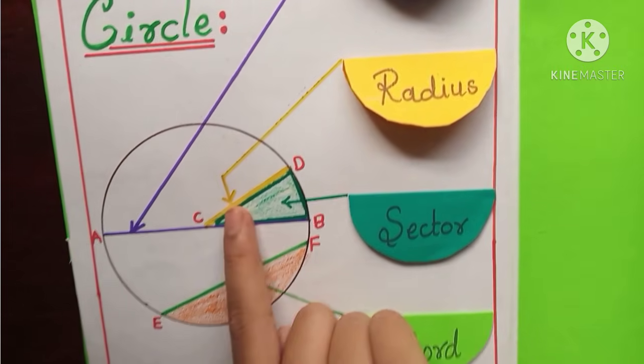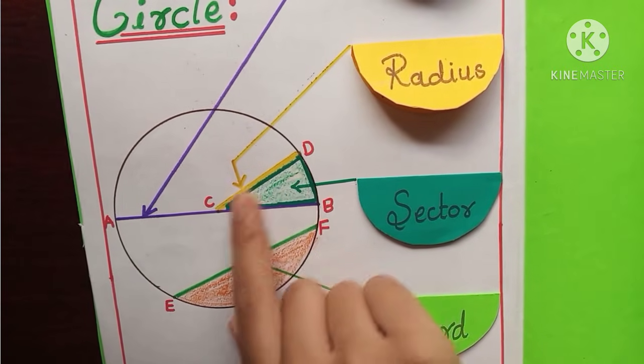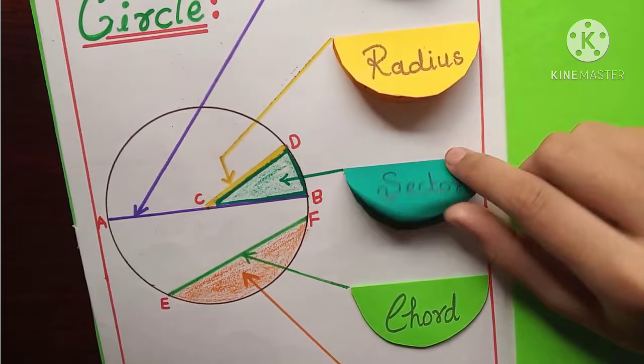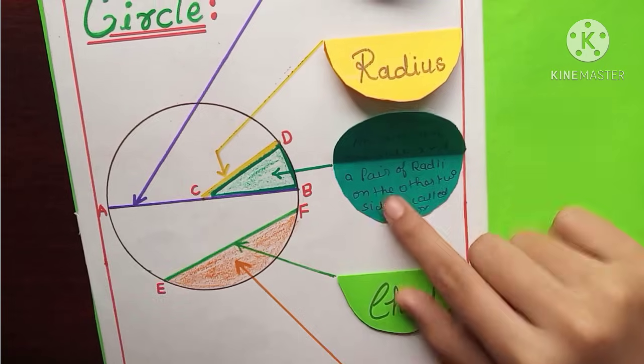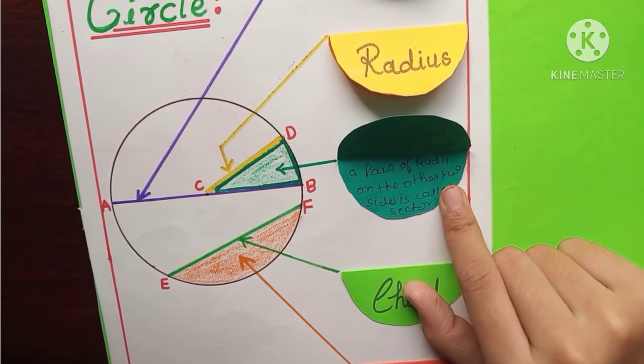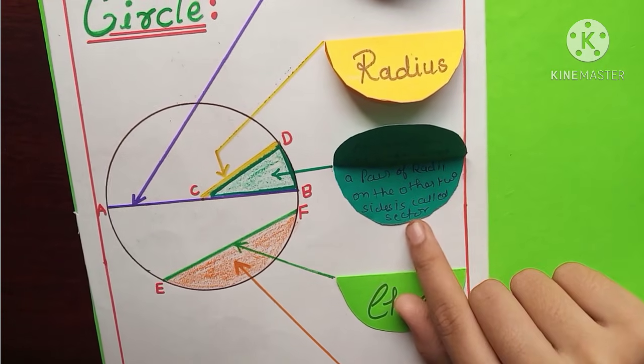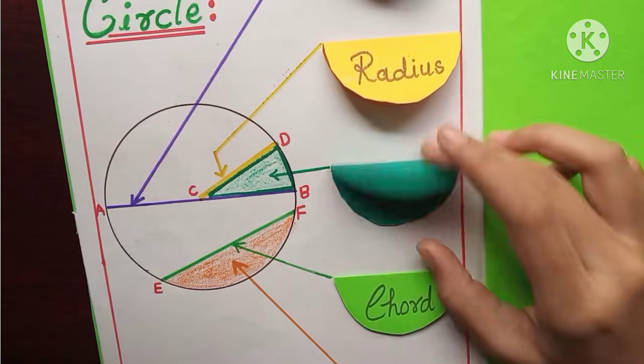And here is the sector. You can see this green, green color. This is sector. Here's the definition. An arc on one side and a pair of radii on the other two sides is called a sector. Here was the definition.